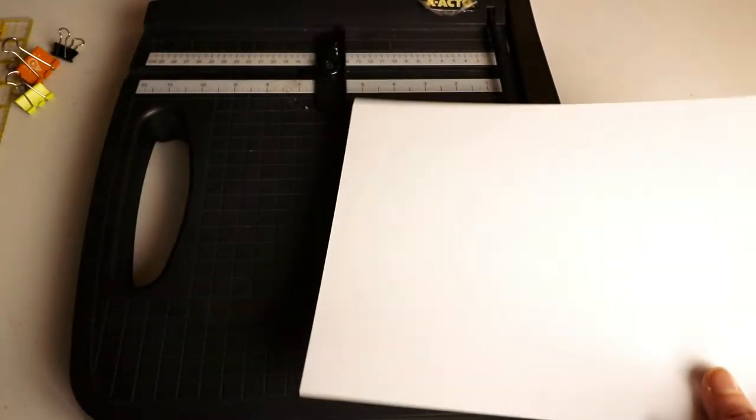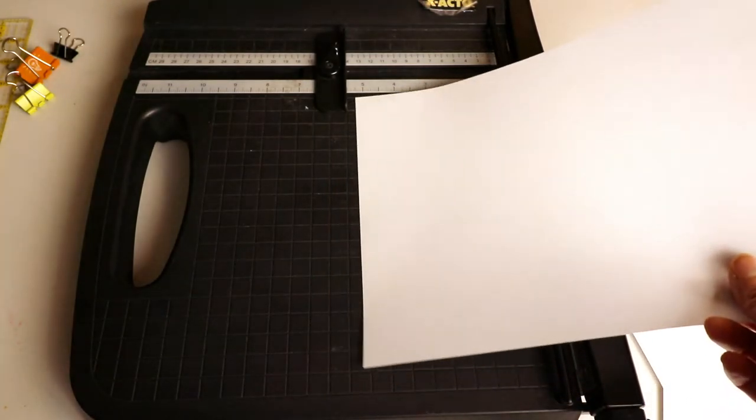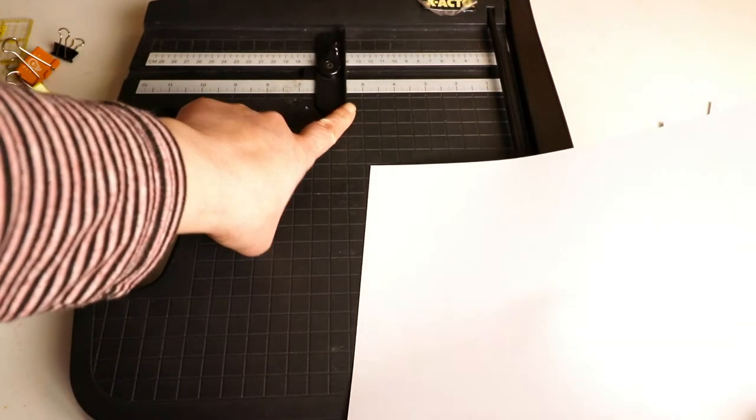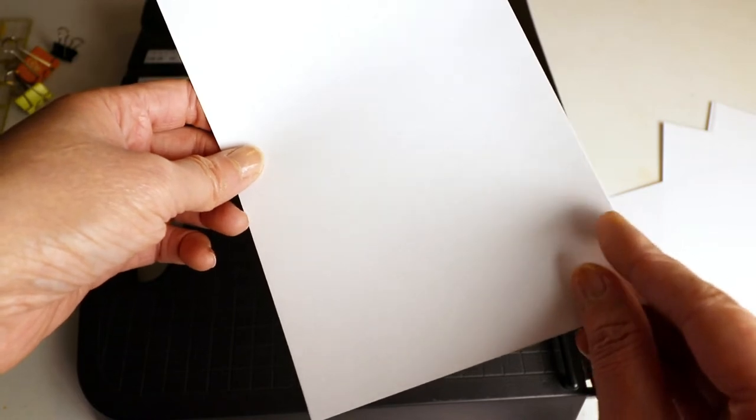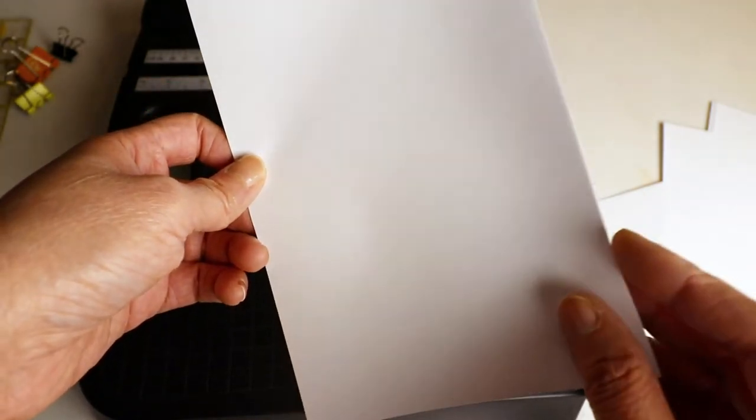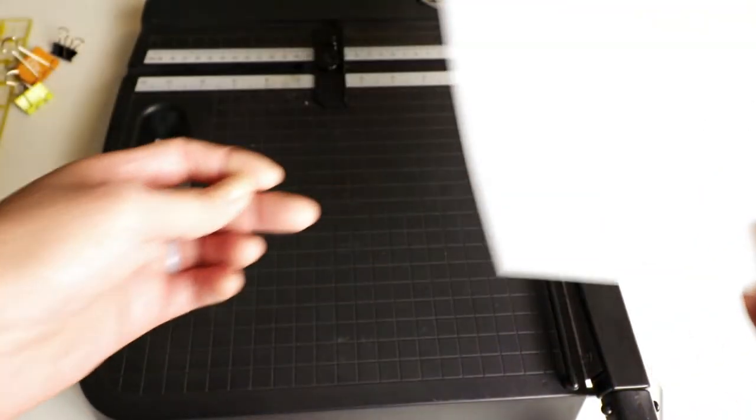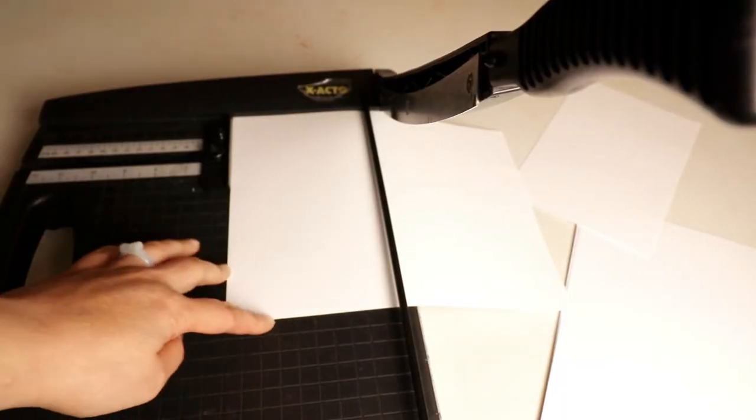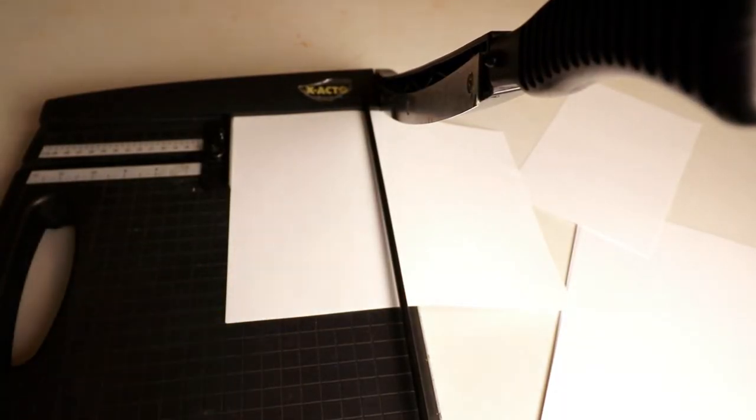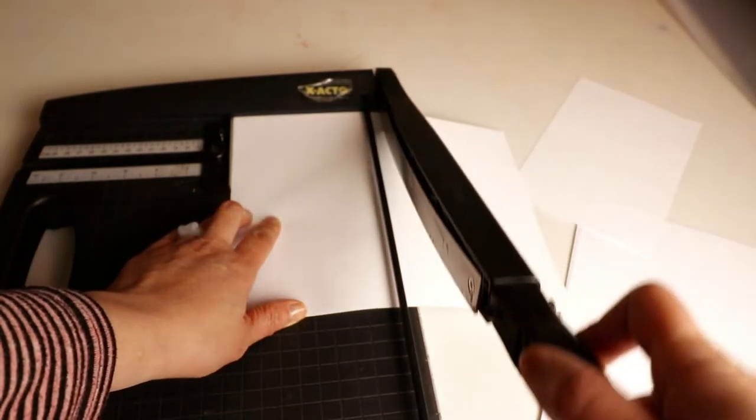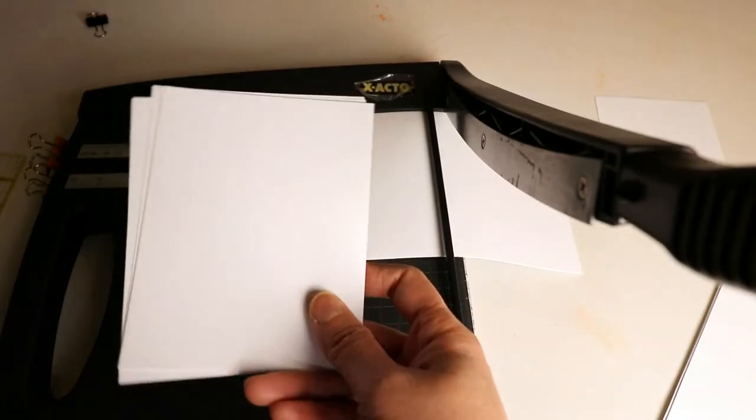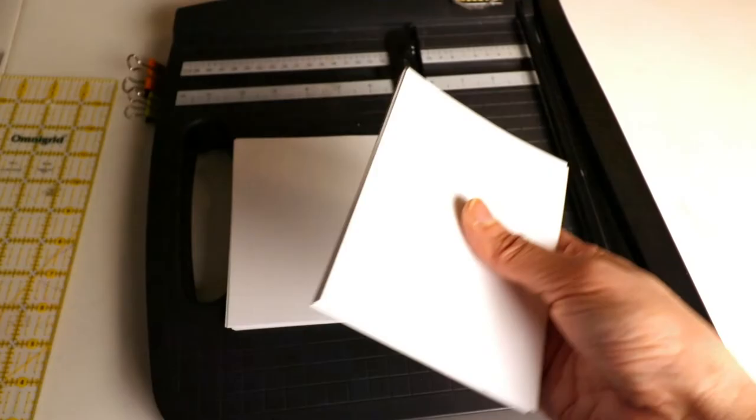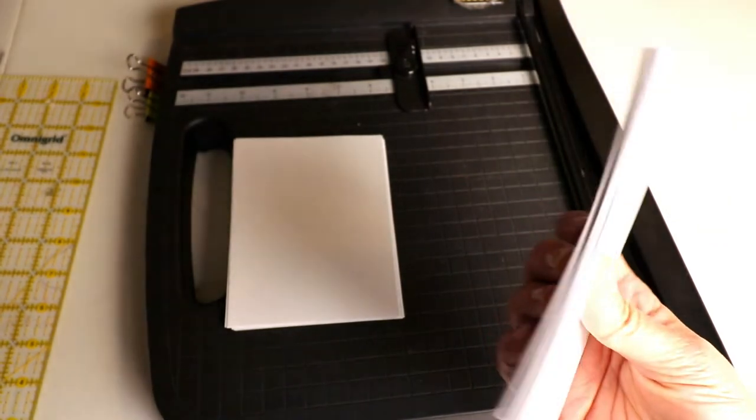Since my letter size paper is 11 inches long, half of it will be 5.5 inches. I try to be more precise so it has a nice edge, but it's really up to you, it doesn't have to be perfect. I try to cut several papers at once so it saves some time. Here I cut it in half again so it becomes a very small booklet. Now I have two stacks of paper.